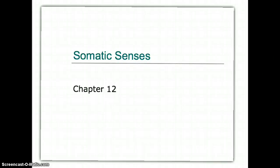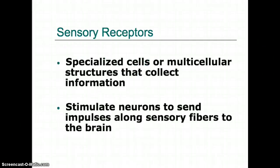We're going to get started on the next chapter — chapter 12 on somatic senses. When we look at somatic senses, we need to bring in some prior knowledge. When we went through the nervous system, we understood there are three main concepts: sensory, integrative, and motor. In order to bring information to the brain and spinal cord where we can interpret the message and send it out via a motor neuron to a gland or muscle, we have to look at particular sensors or receptors.